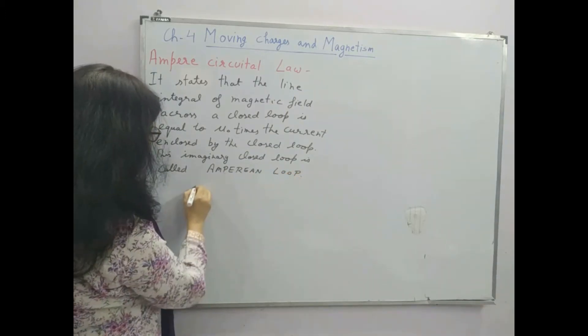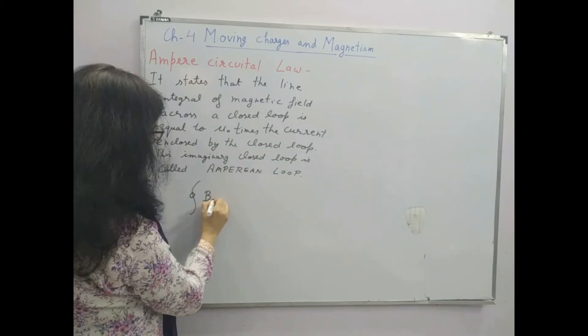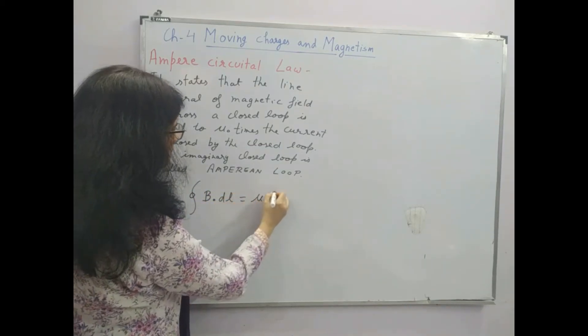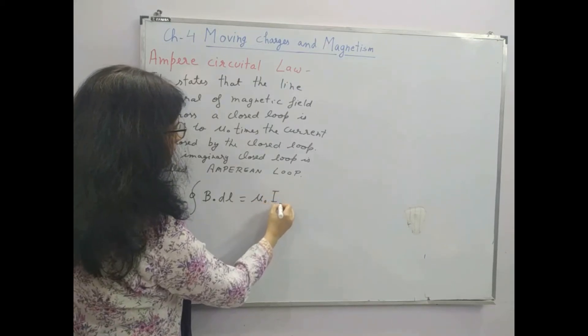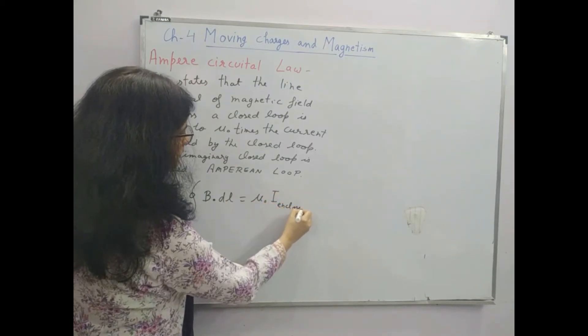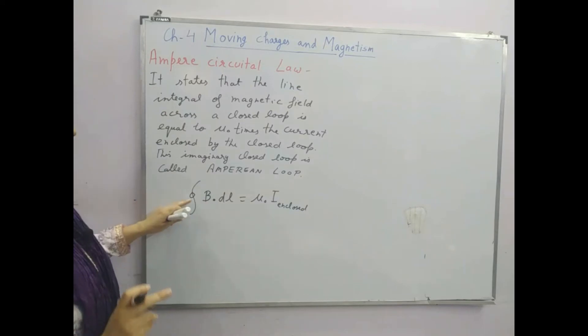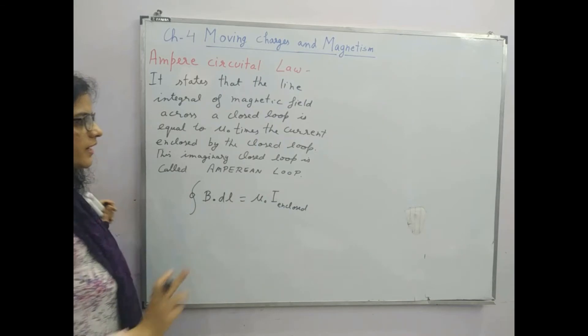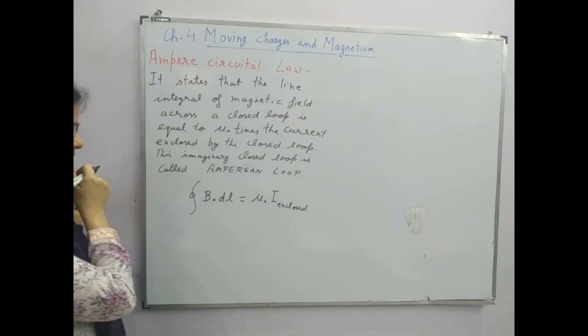So the mathematical form is B dot dl. This circle shows the closed integral. This is B dot dl is equal to mu naught times the current enclosed by the Amperean Loop.